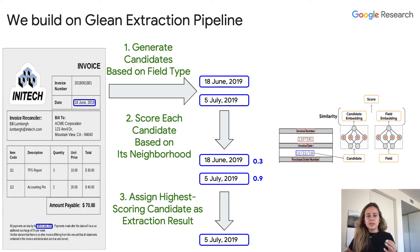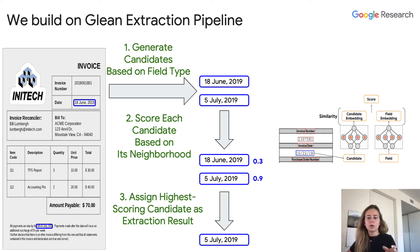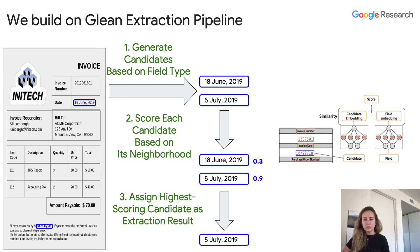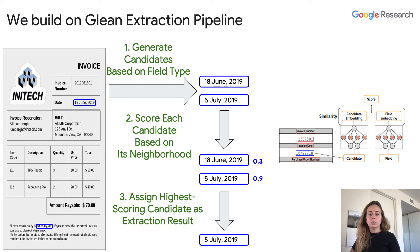Briefly, the features of each extraction candidate supplied to the model are its neighboring words and their relative positions. The candidate's value is excluded from the set of features in order to avoid biasing the model towards the distribution of values seen before. The model learns a dense representation for each extraction candidate using a simple self-attention-based architecture, and separately learns dense representations for each field in the target schema. Each candidate is scored based on its similarity to its corresponding field embedding, and the model is trained as a binary classifier using cross-entropy loss.